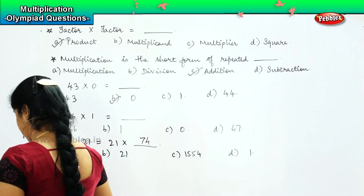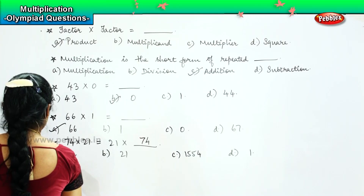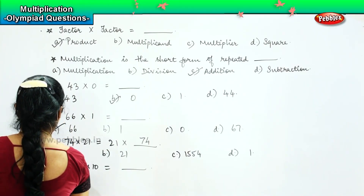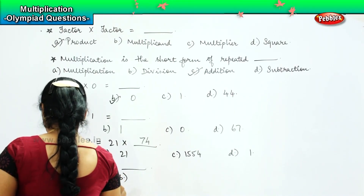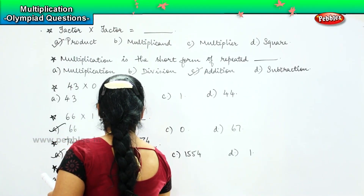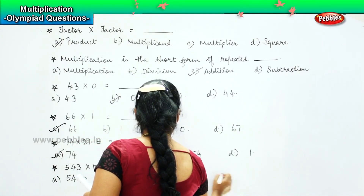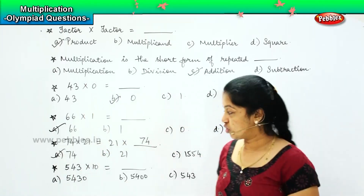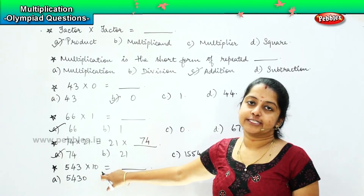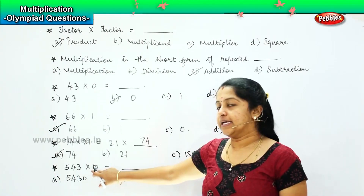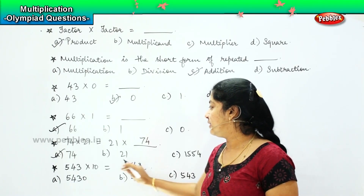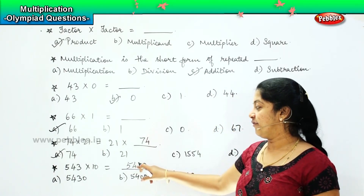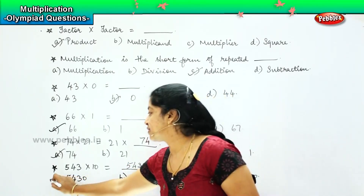Here is your next question: 543 into 10 is equal to dash. Your options are: A) 5430, B) 5400, C) 543, and D) 54300. This is the rule of tens and hundreds. 543 into 1 is 543, and we add the 0 towards the end. So the answer is 5430, which is option A.